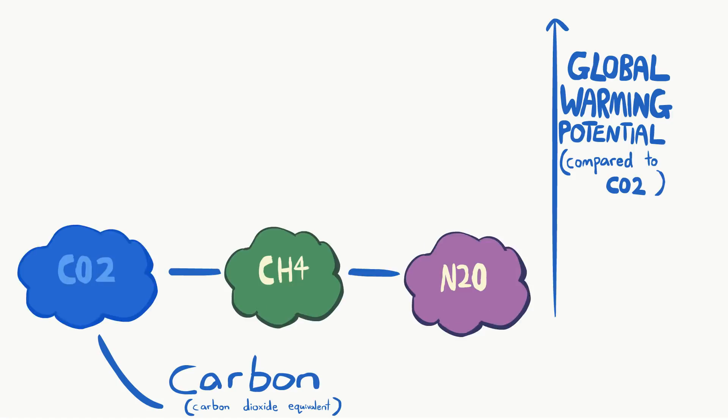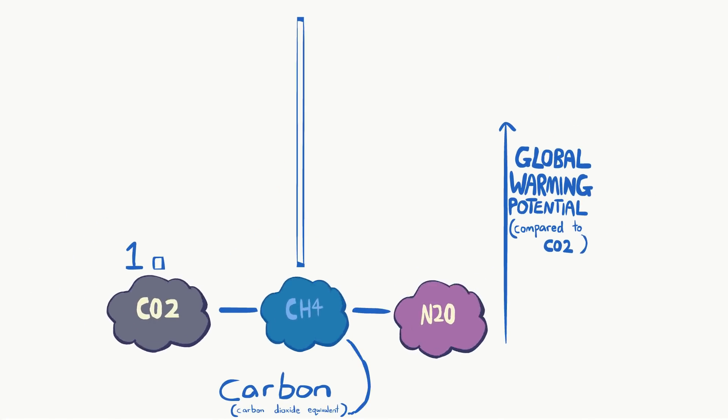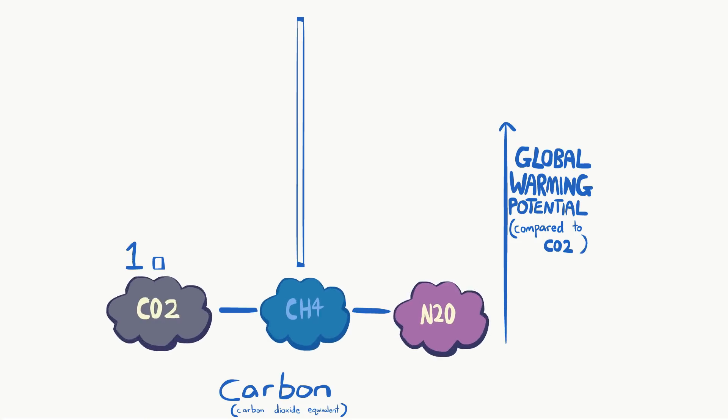CO2 is equivalent to itself, so every ton of CO2 that is emitted is quantified as one ton of carbon. Methane has a global warming potential of 25, because it is 25 times more effective than CO2 at warming the planet. So every ton of methane emitted is 25 tons of carbon.